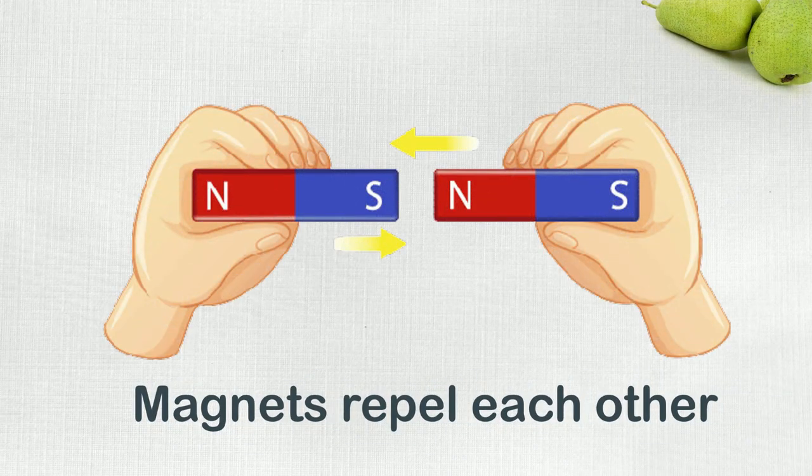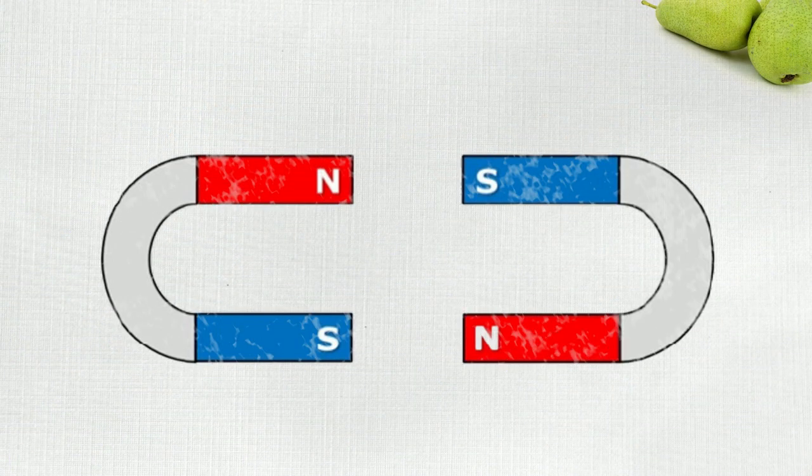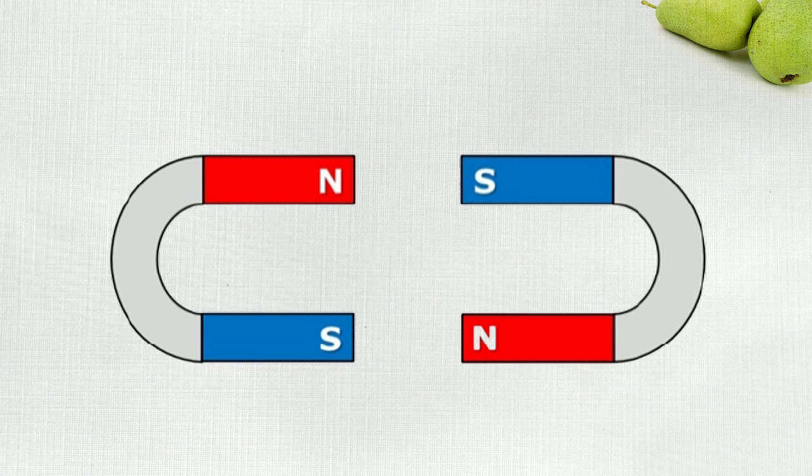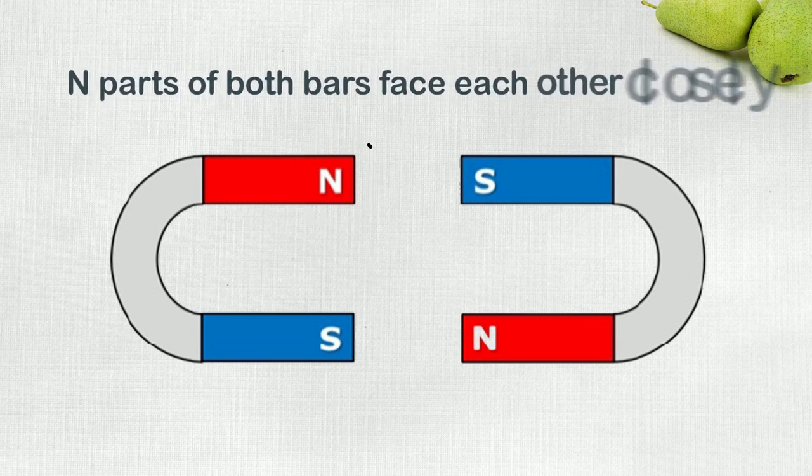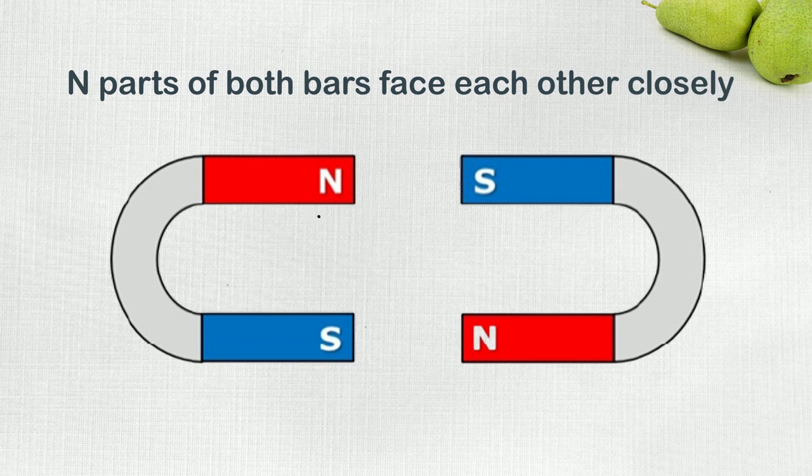The same sides of magnets repel each other. For example, if we have two magnet bars and we make the end parts of both bars face each other closely, they will push each other away. The same will happen if both S parts were brought together.